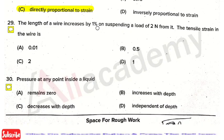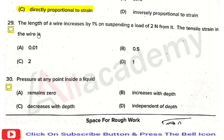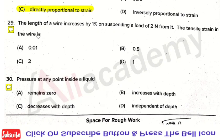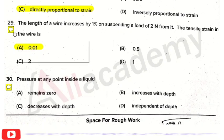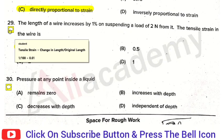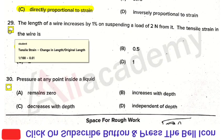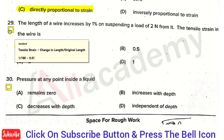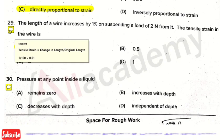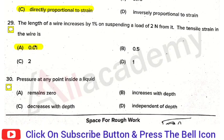The next question: the length of a wire increased by one percent on suspending a load of 2 newton — the tensile strain in the wire is option 1, that is 0.01. Note the load is not relevant to tensile strain. Tensile strain is defined as change in length divided by original length. The percentage increase in wire length is 1%, so 1 divided by 100 equals 0.01.